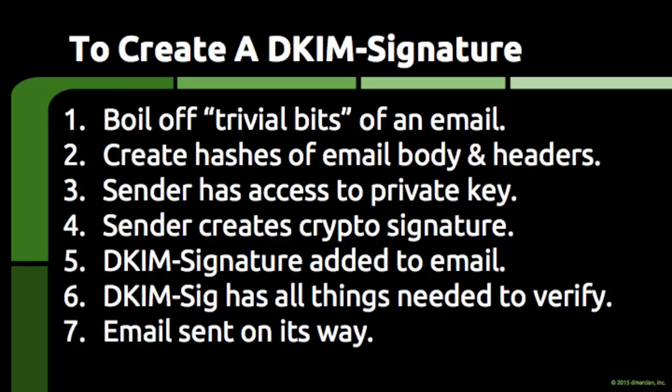What's left are the parts of the email that make it unique. Step 2: The server then jams the email through a math function that yields a hash. This hash is not breakfast food or a marijuana derivative — it's a long string that is unique to the email, sort of like a fingerprint. The server ends up making two hashes: one for the body of the email and one for the headers of the email.